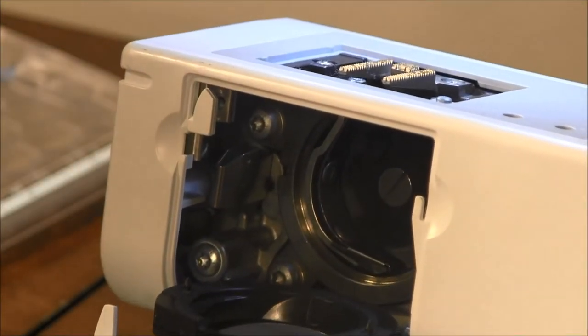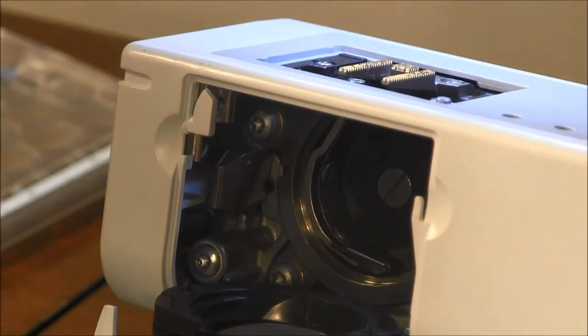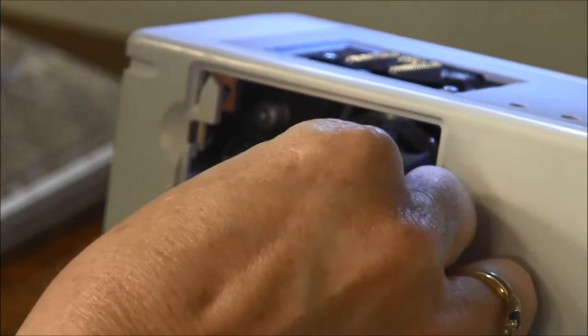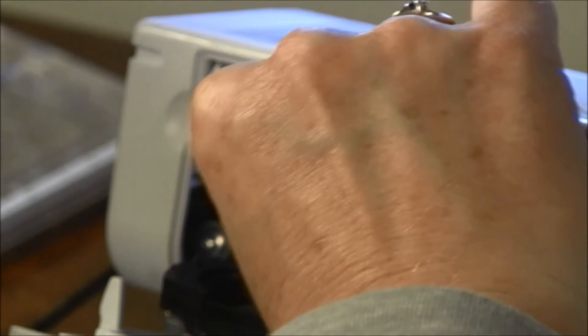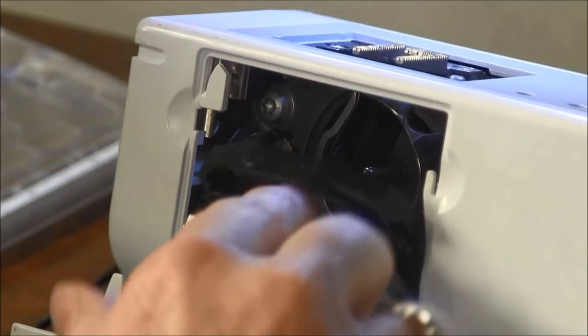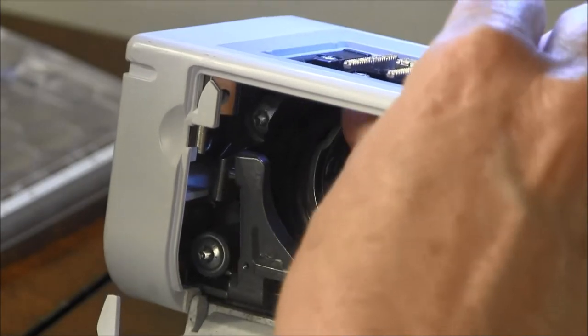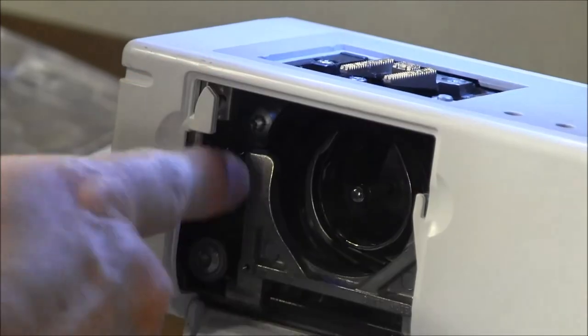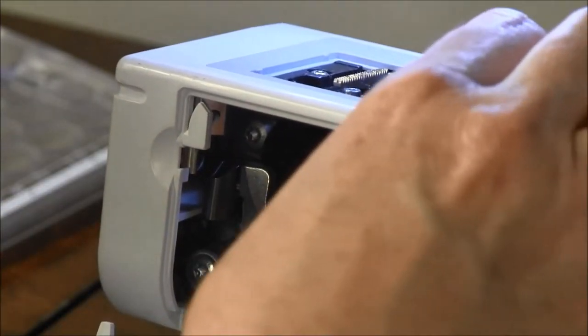So then you reassemble the machine in the backwards order from what you took it apart. I'm going to place my hook back into its spot and then flip the hook race cover up and make sure that it's snapped in place.